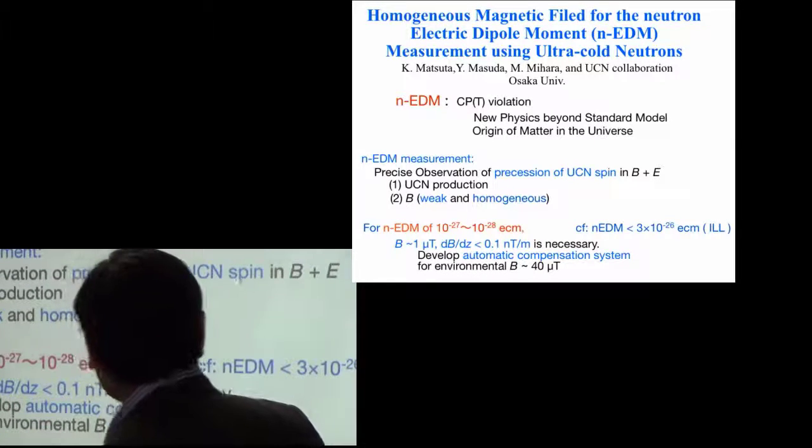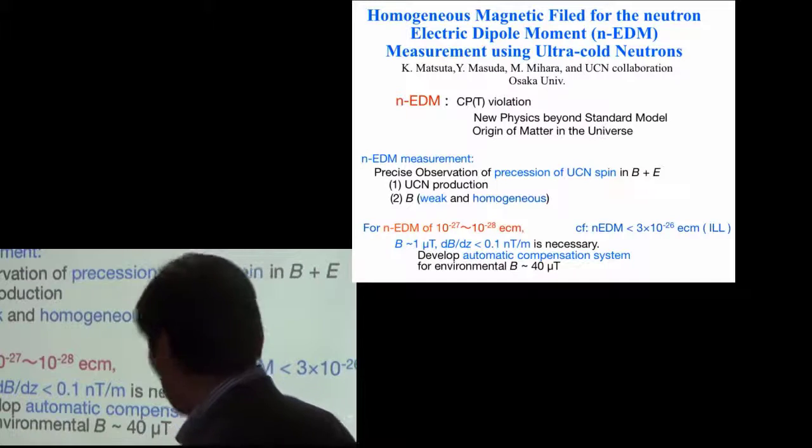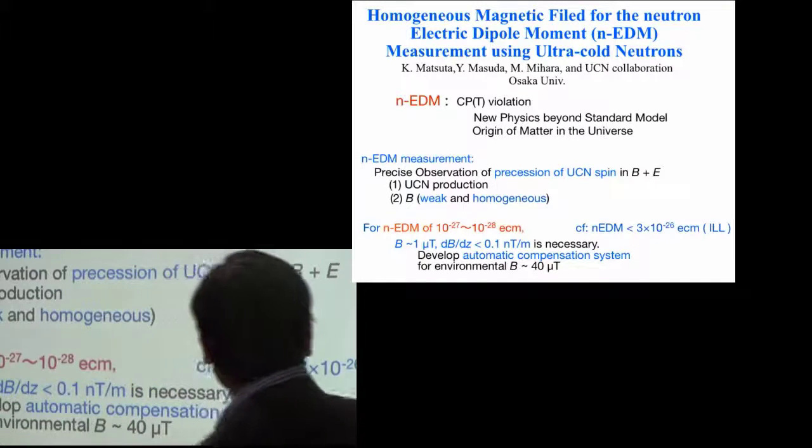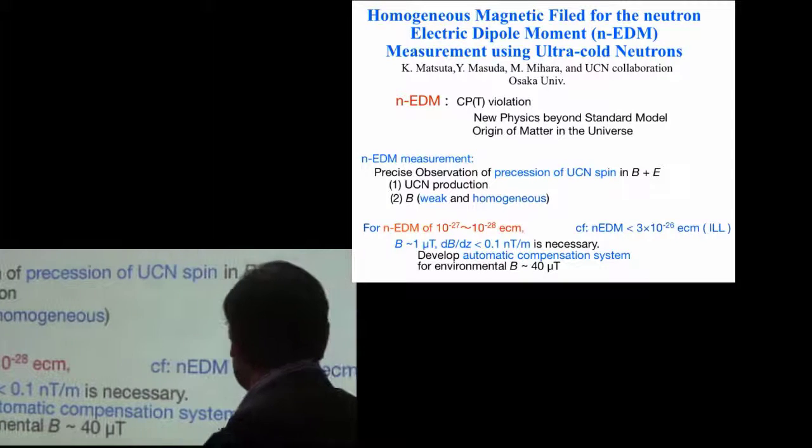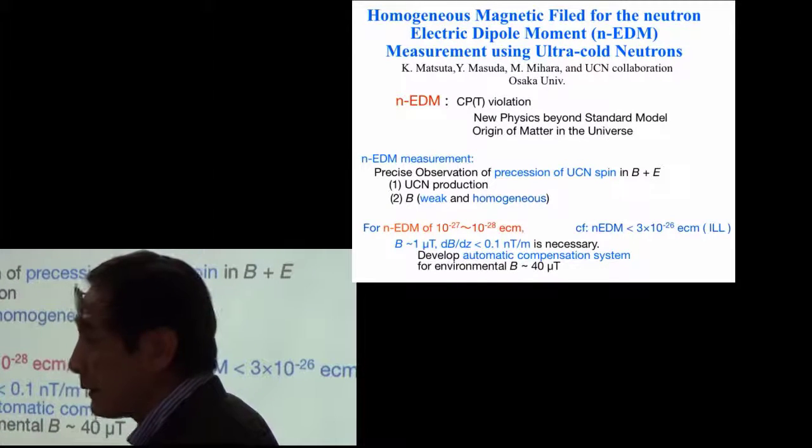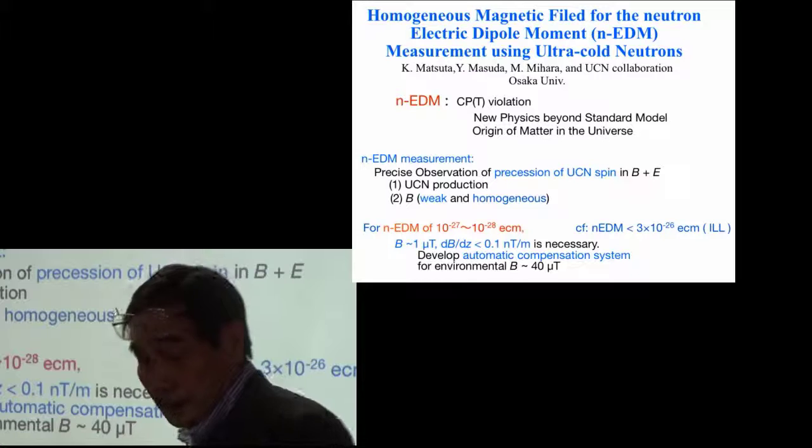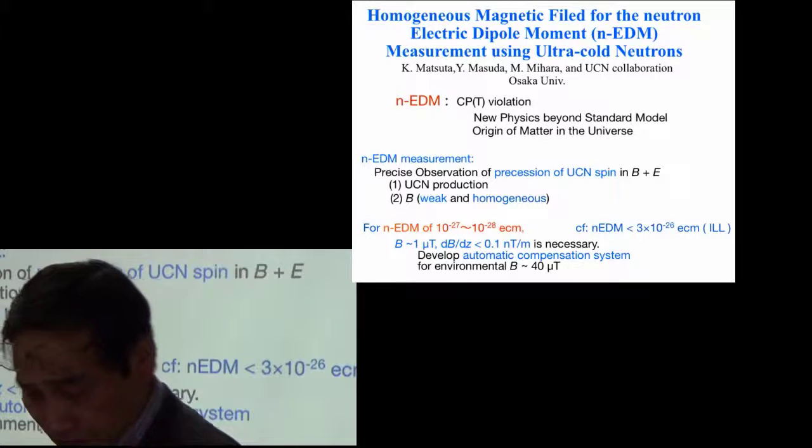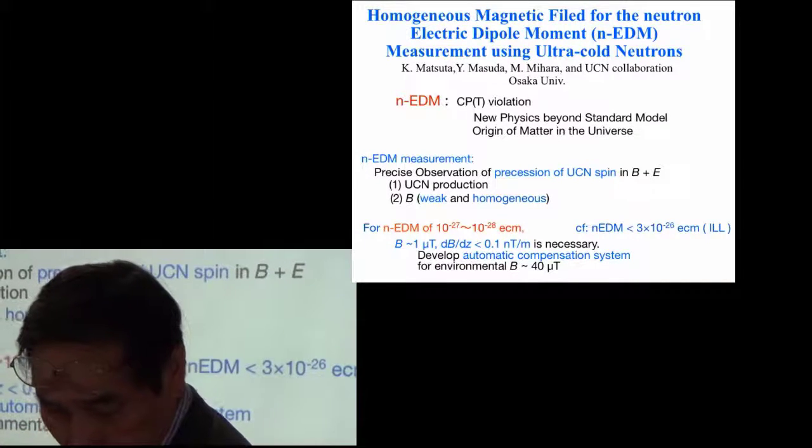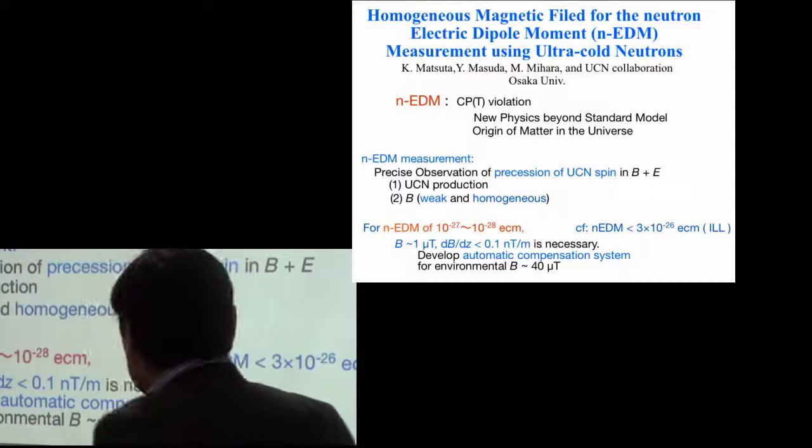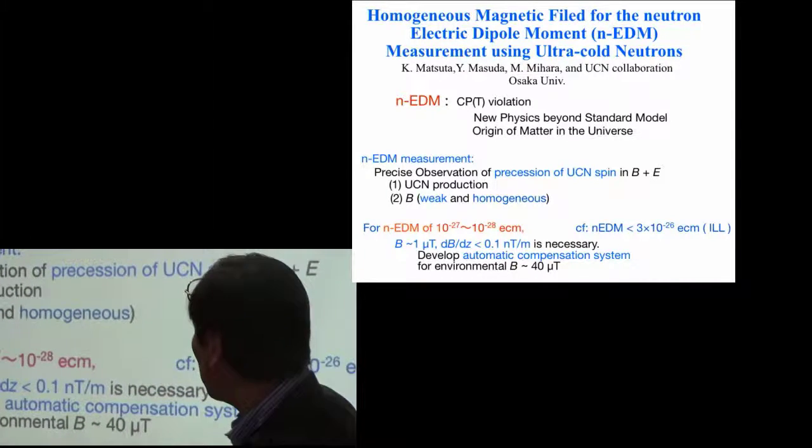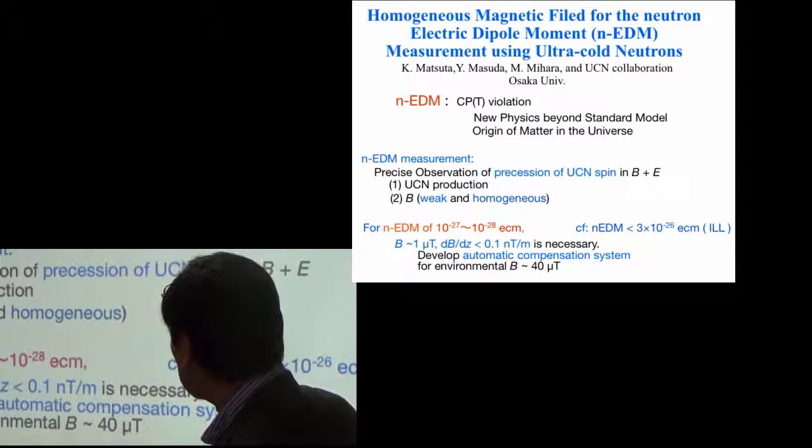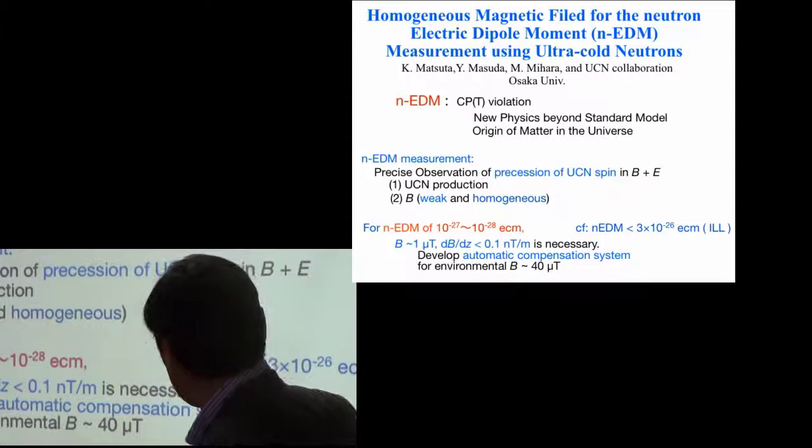The present world record of the upper limit of the neutron EDM is about 3 times 10 to the minus 26, which is provided by Institute Laue-Langevin. And we aimed at the measurement of the neutron EDM of an order of 10 to the minus 27 cm.